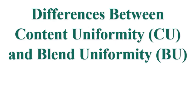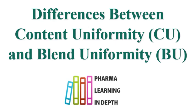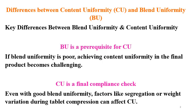In this video, we will cover the differences between blend uniformity and content uniformity. Pharmaceuticals should contain the amount of drug substance or API as per the label claim, which is a very important and critical requirement for safety, efficacy, and quality. Blend uniformity and content uniformity give you the correct confidence and understanding about whether the product will meet the quality requirements for content uniformity and assay.